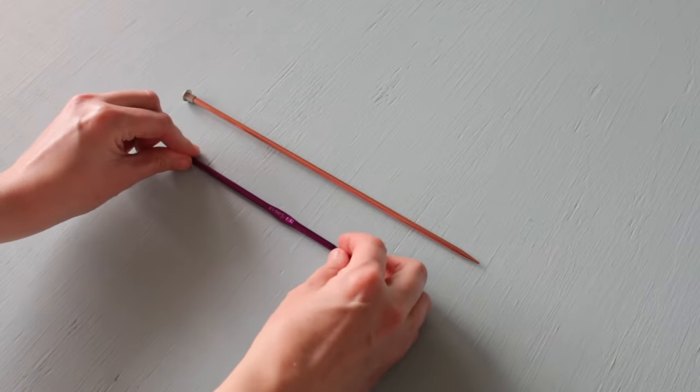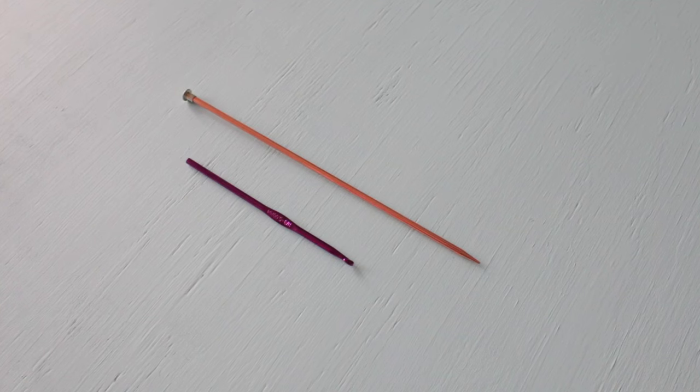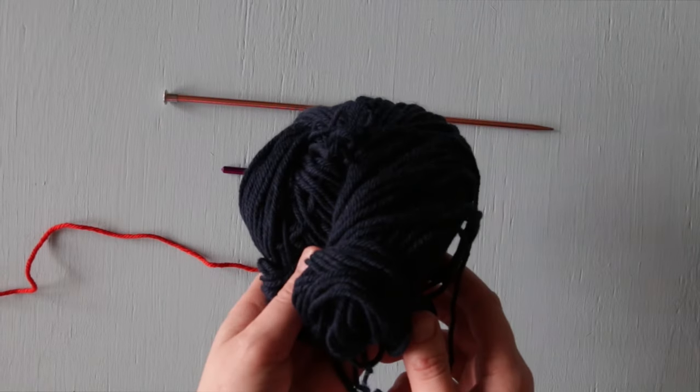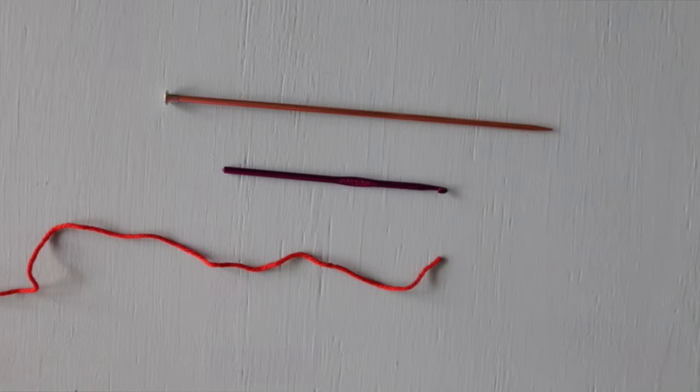To work this cast-on you're going to need a knitting needle, a crochet hook of a similar size, some scrap yarn, and also yarn for knitting your project.